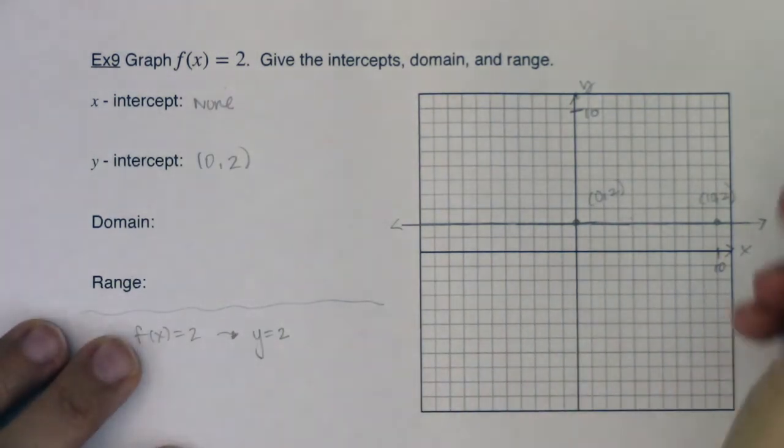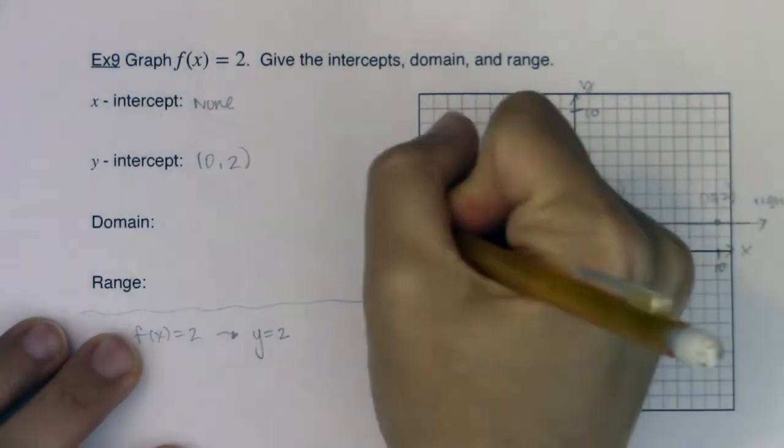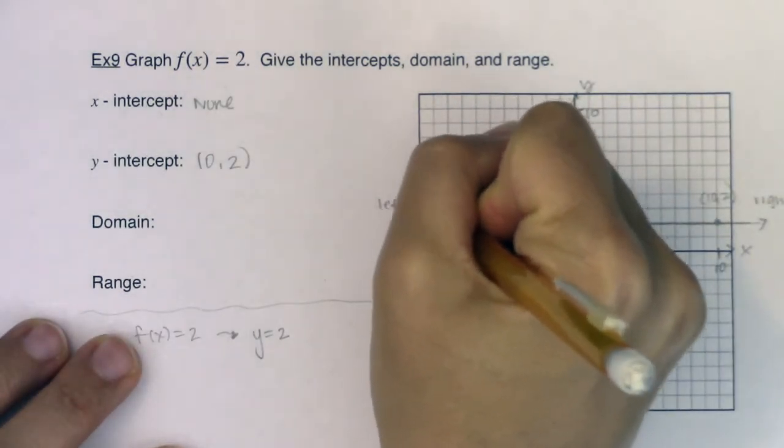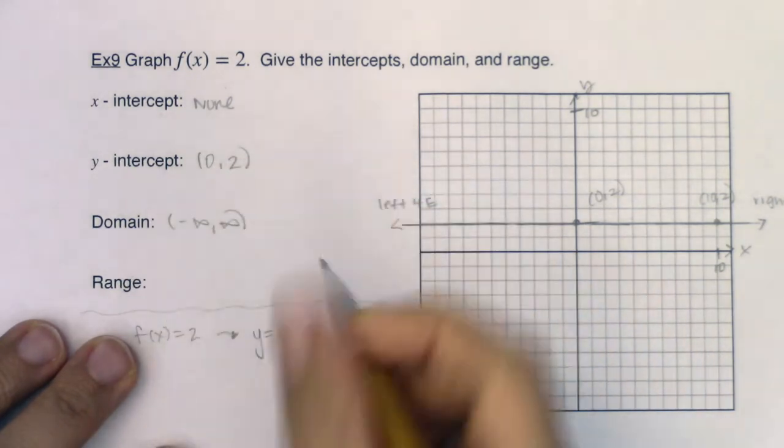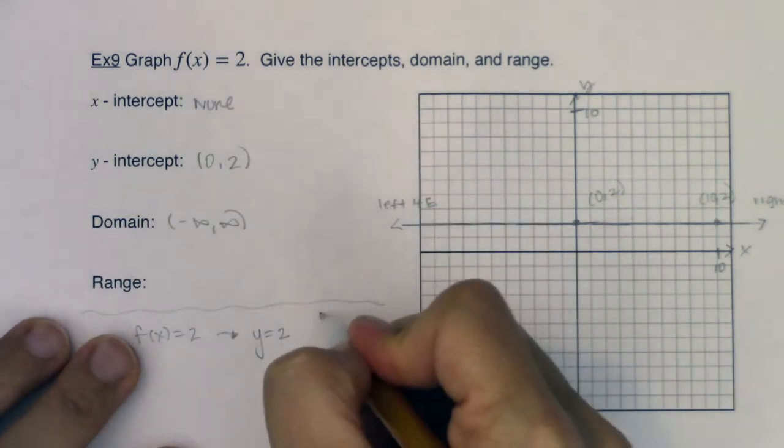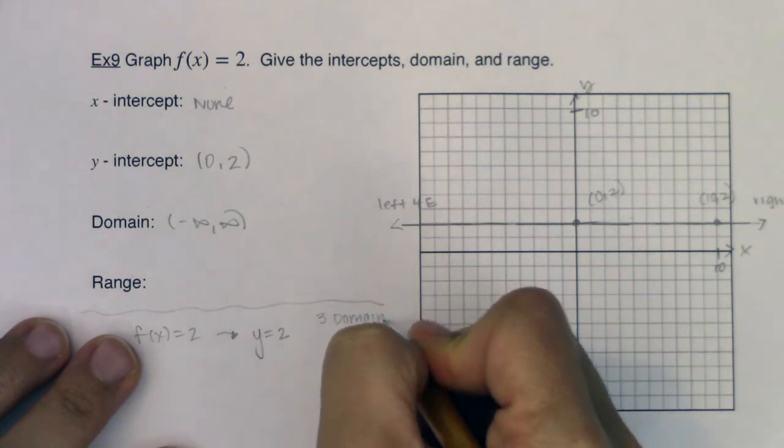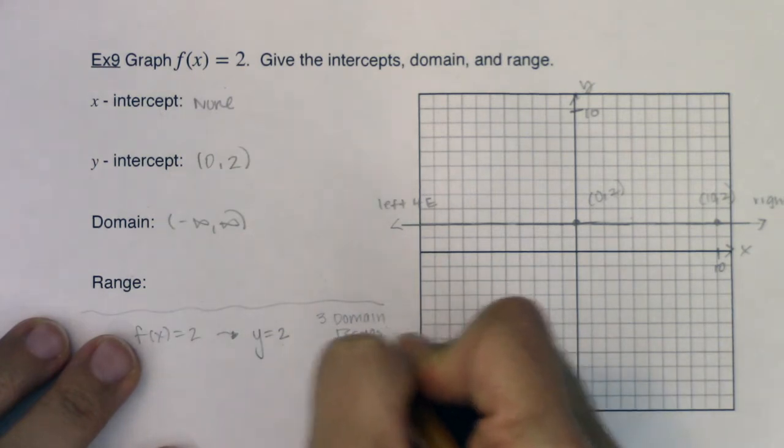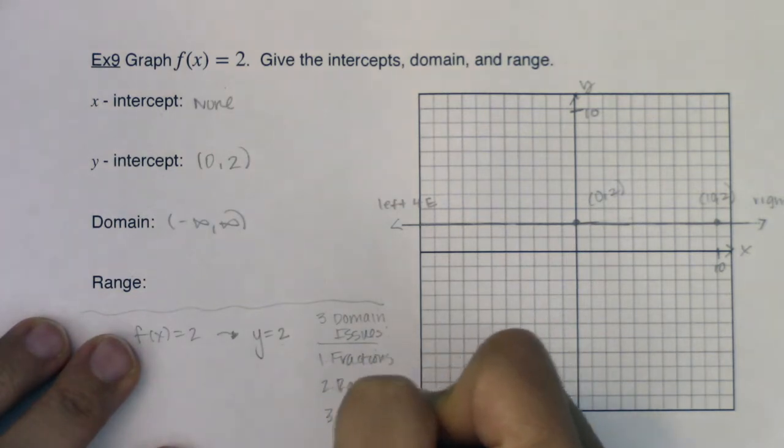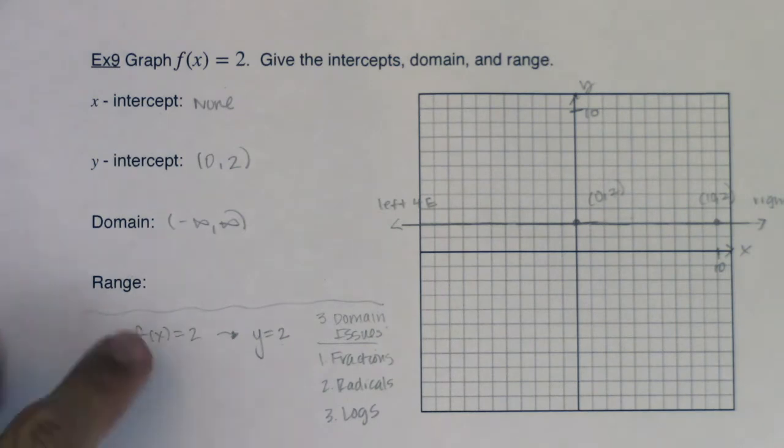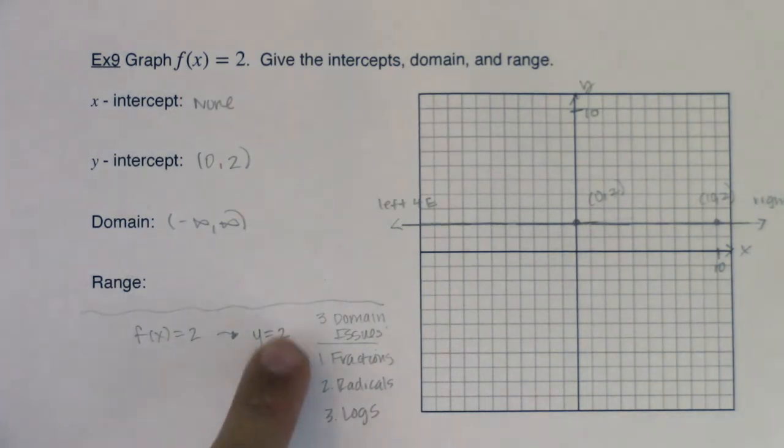Now, the domain of this, let's look at the arrows. This is right forever and this is left forever. So from here you can see the domain is negative infinity to infinity. Or you could take a look at this and say, well, what are my three domain issues? And let's talk about them again because they're going to come up all the time in this class. So we have to look at fractions, radicals, and logs. Those are our three domain issues. We'll look at y equals 2. It's not a fraction, it's not a radical, it's not a logarithm. So my domain is all real numbers.